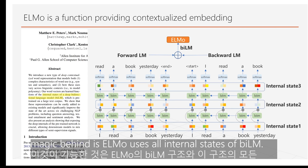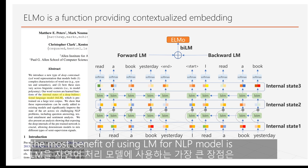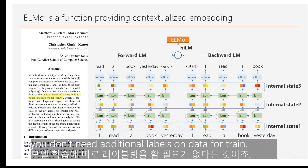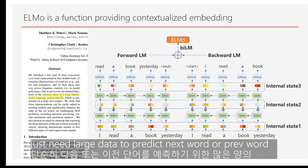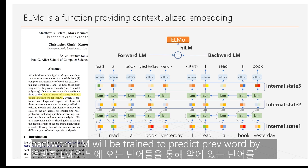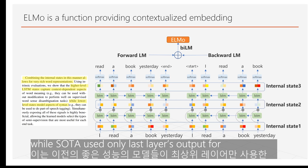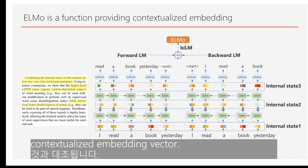The magic behind ELMo is that it uses all internal states of a bidirectional language model. The bi-LM is simply a concatenation of a forward LM and a backward LM. One benefit of using a language model for NLP is that you don't need additional labels — you just need a very large dataset to predict the next word or previous word. When training ELMo, the forward LM is trained to predict the next word given previous words, and the backward LM is trained to predict the previous word given future words.